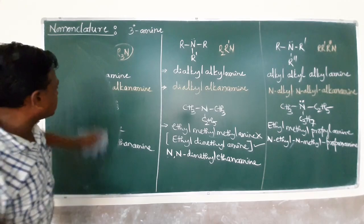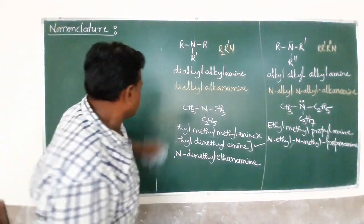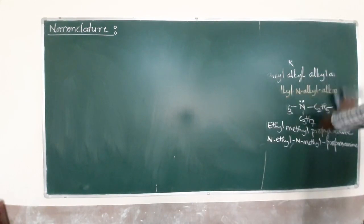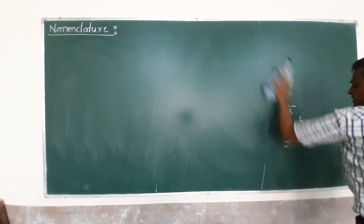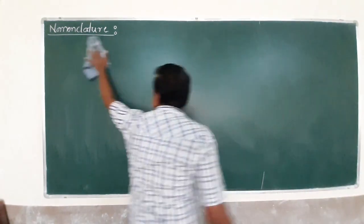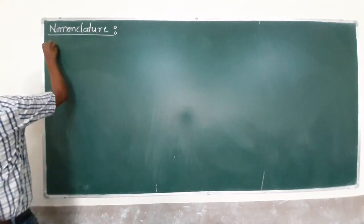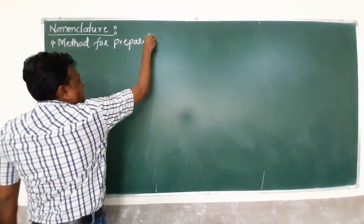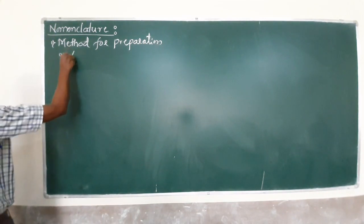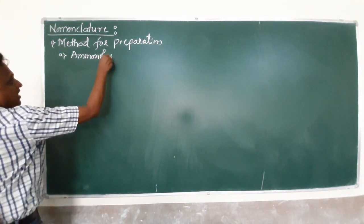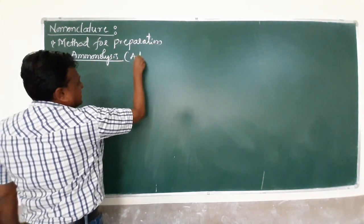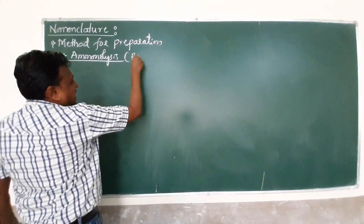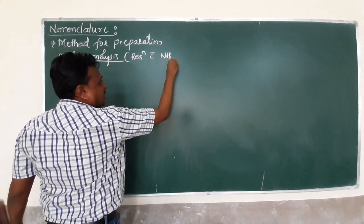We now move on to the next part of our syllabus: methods for preparation of amines. We will discuss how to prepare amines in the laboratory. The first method is ammonolysis — meaning the reaction with ammonia, specifically alcoholic ammonia.